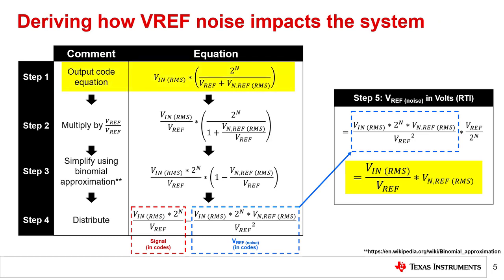The table on the left begins with the output code equation shown on the previous slide, restated here in step one. The goal is to manipulate this equation such that there are distinct signal and noise terms. To accomplish this, step two multiplies the equation by VREF divided by VREF. This does not change the result of the output code equation as long as you assume that VREF is greater than zero. Next, simplify the modified equation in step two by employing the binomial approximation in step three. If you would like to learn more about this topic and how this transformation is performed, review the information provided at the link in the top right.